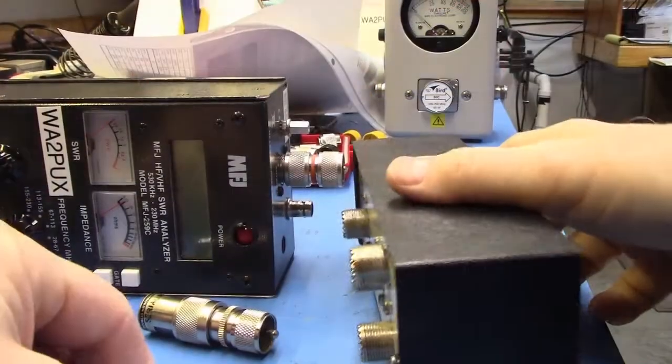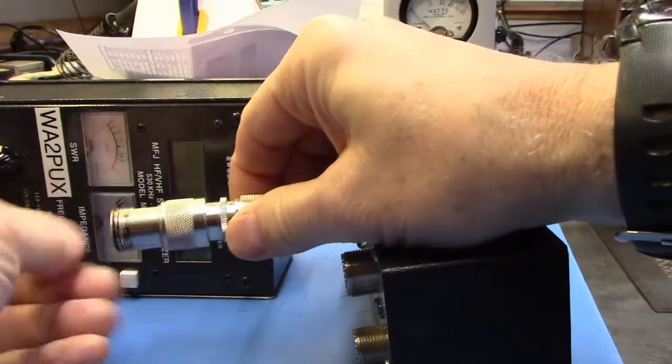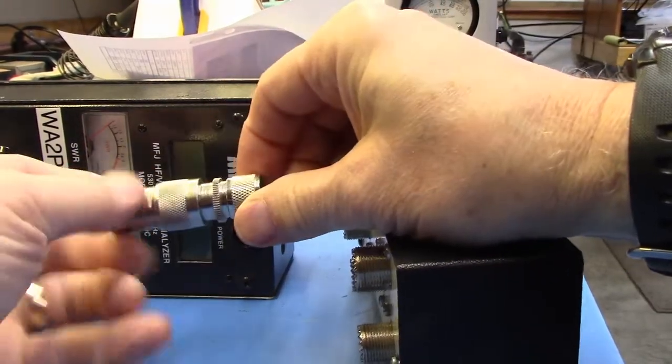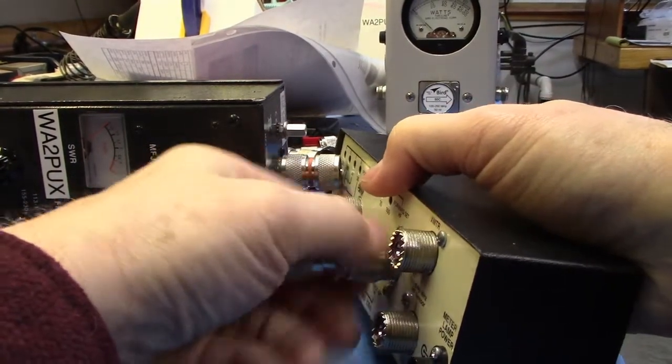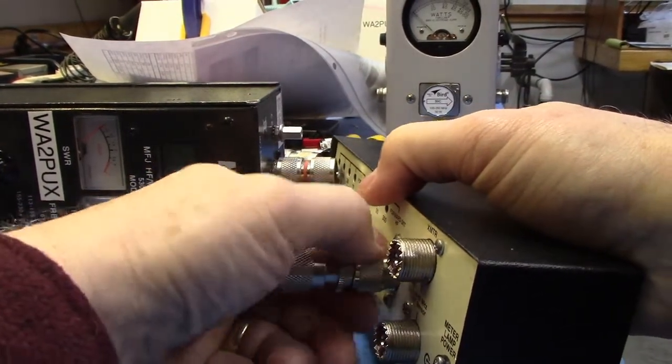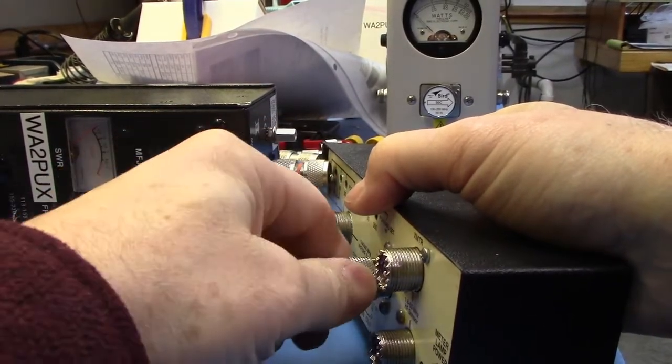Here's the experiment. The first step is to take your calibrated known good 50 ohm load and connect this up to the antenna connector. Be sure that you get that nice and snug and tight because believe it or not, it does make a difference.